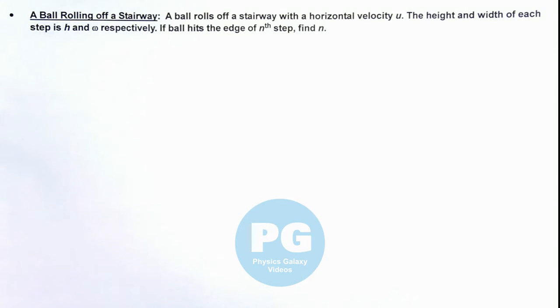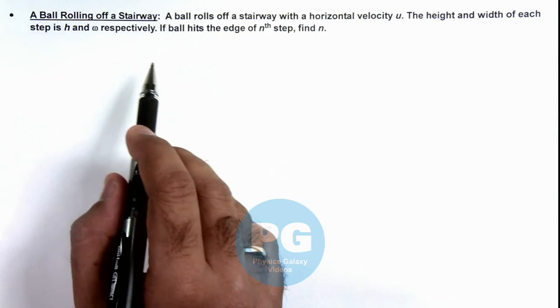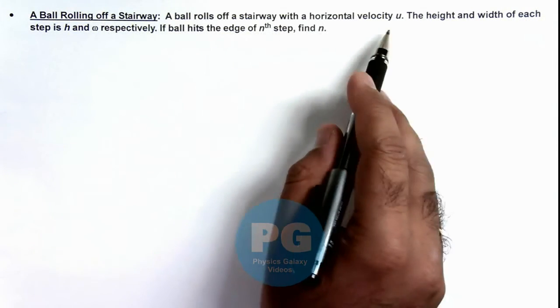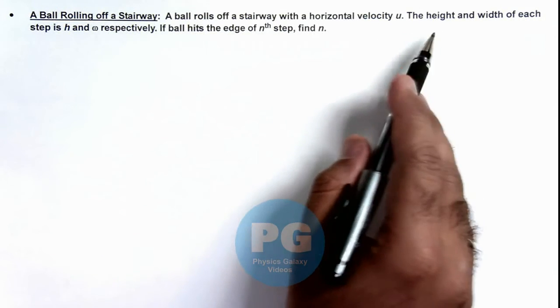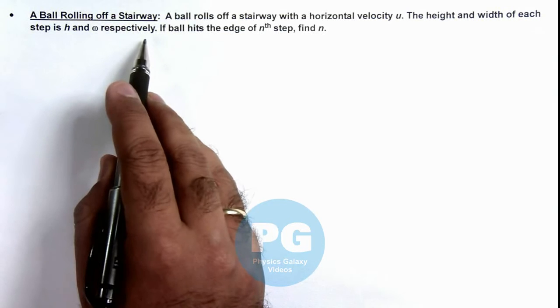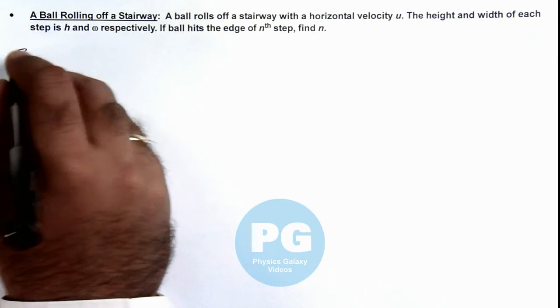In this illustration, we'll discuss a ball which rolls off a stairway. We are given that a ball rolls off a stairway with a horizontal velocity u. The height and width of each step is h and w respectively. If the ball hits the edge of the nth step, we are required to find the value of n.